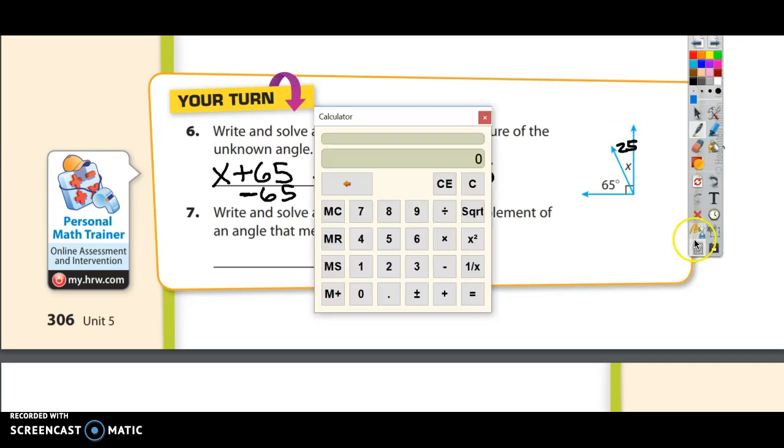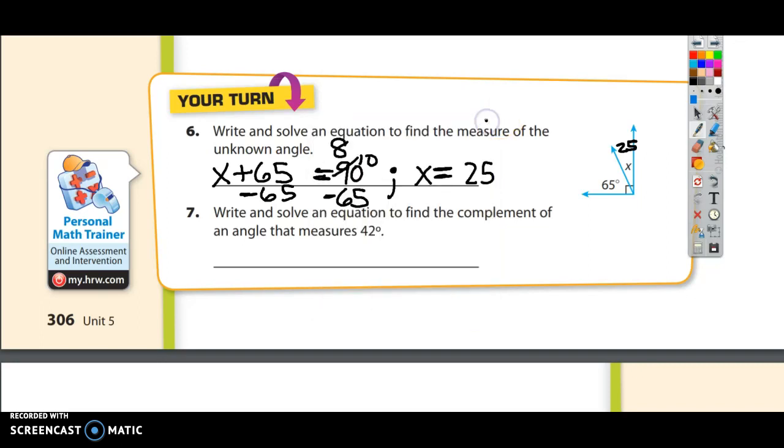And you could check that various ways. You could just add up. What's 65 plus 25? It's 65 plus 25 adds up to 90. That's what it needs to add up to. So that's the correct answer to number 6.